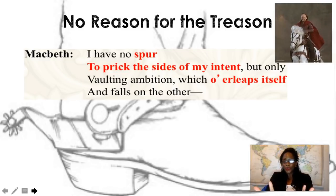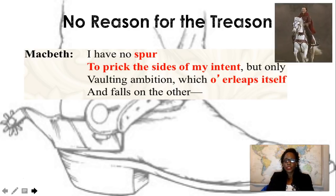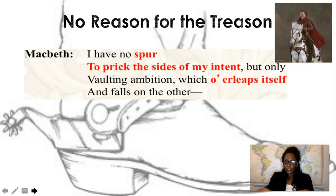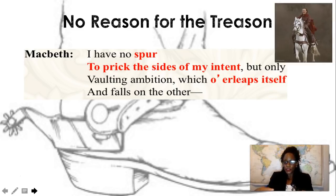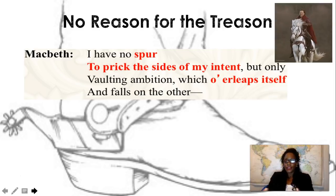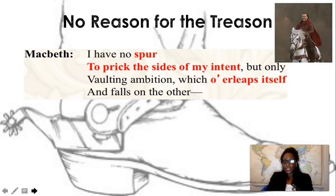Next is what I call 'no reason for the treason.' Macbeth says: 'I have no spur to prick the sides of my intent, but only the vaulting ambition which overlaps itself and falls on the other.' He compares himself to a rider using a spur on the side of a horse to make it go faster. The spur represents what motivates him to go through with killing King Duncan — and he concludes he has no real reason beyond vaulting ambition, and that's not good enough.